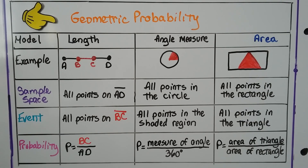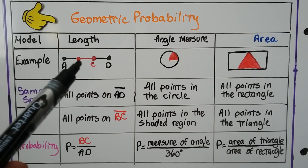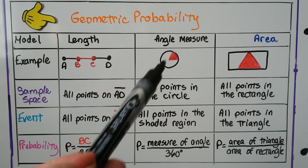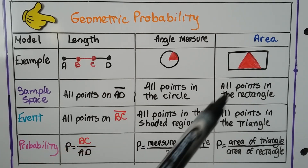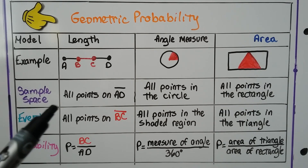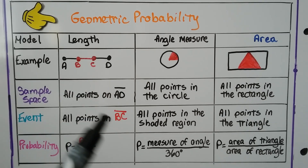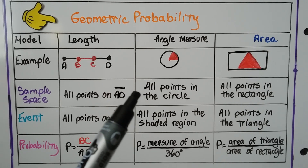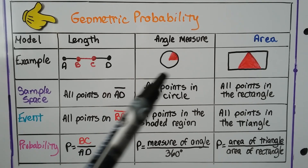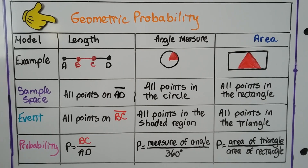Here's some info for your notes. For geometric probability, we have examples: a segment with points A, B, C, D; a circle that has an angle inside; and a rectangle that has a red triangle inside — that will be for area. The sample space for length would be all points on segment AD. For angle measure, it would be all points in the circle. For area, it would be all points in the rectangle, including what's inside the red triangle.